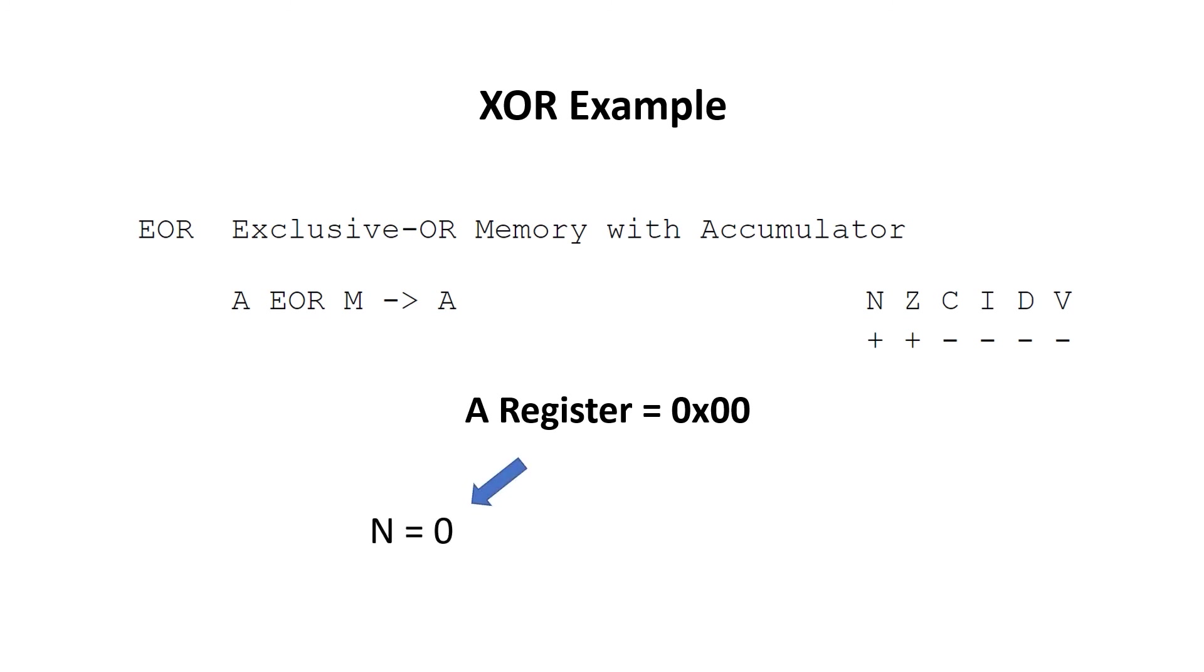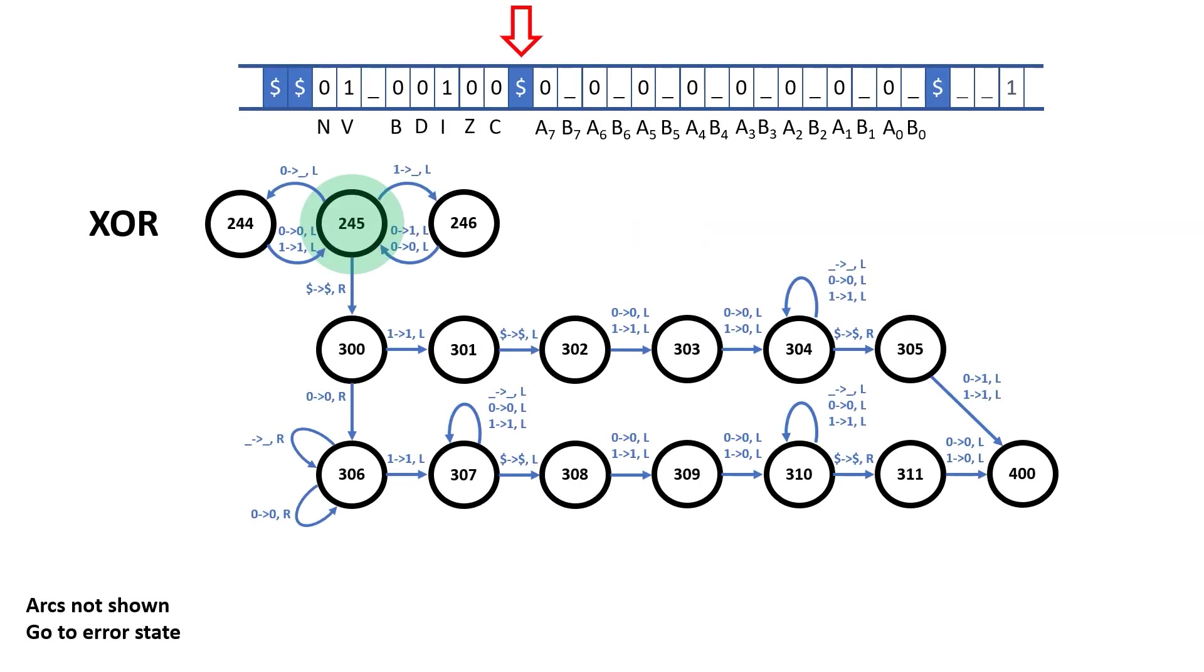Now let's examine the case where the A register holds 0 after the XOR. This time we want the N flag to be 0 and the zero flag to contain a 1. We go down to rule 306, but this time we step across all the data until we hit the dollar symbol. Once that happens, we follow a different arc out of rule 306 to 312.